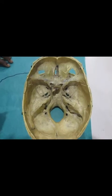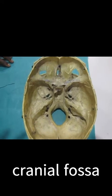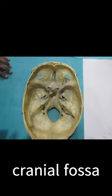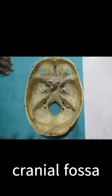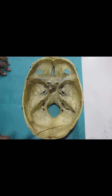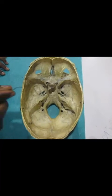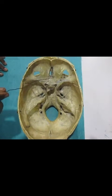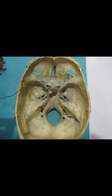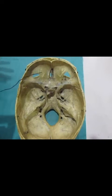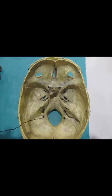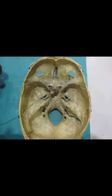Good morning. Today we are going to read about the cranial fossae. What you are seeing here is the interior of the base of the skull, which is demarcated by three cranial fossae: the anterior cranial fossa, the middle cranial fossa, and the posterior cranial fossa.